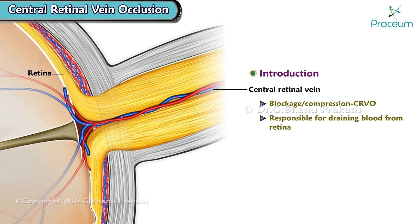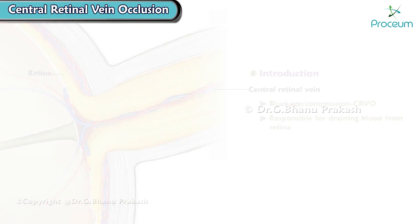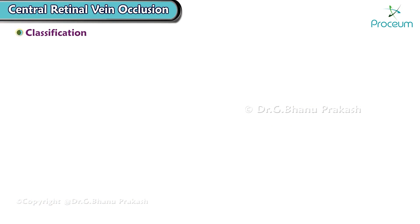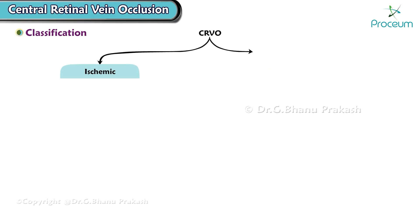Let's explore the key aspects of central retinal vein occlusion, including its types, risk factors, diagnosis, and treatment. Let's start with the classification. Central retinal vein occlusion can be classified into two main types: ischemic central retinal vein occlusion and non-ischemic central retinal vein occlusion.